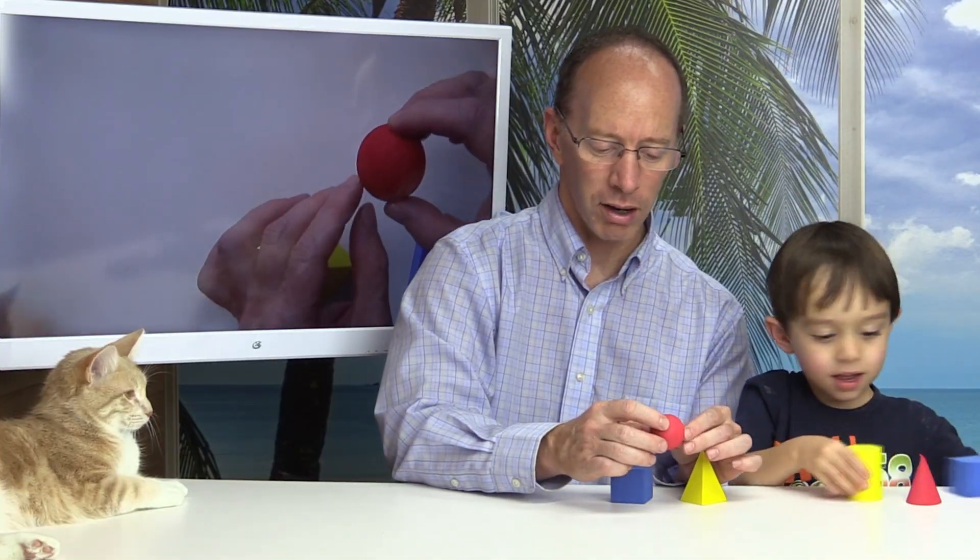Hey, this one is rolling off the table. Do you know what that's called? A ball. That's right. It's a ball, but it's also called a sphere. Can you say sphere? Sphere. Sphere. That's right. Great.